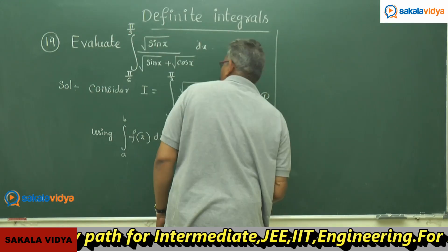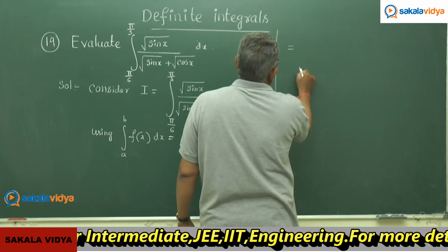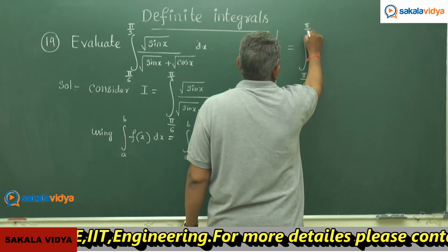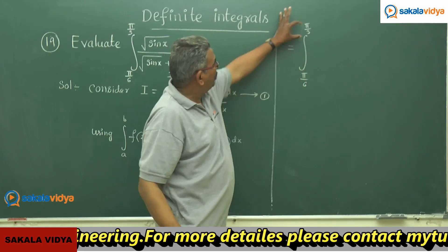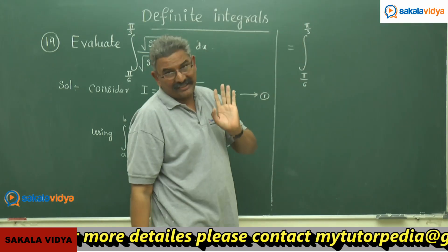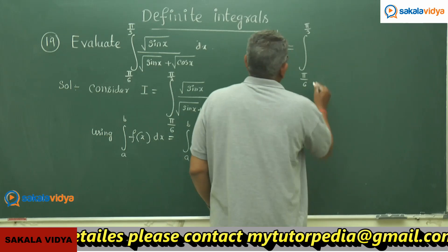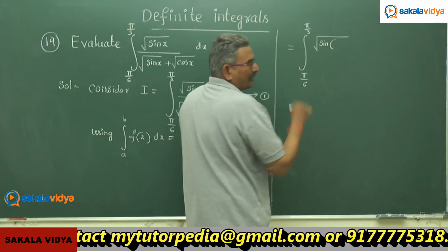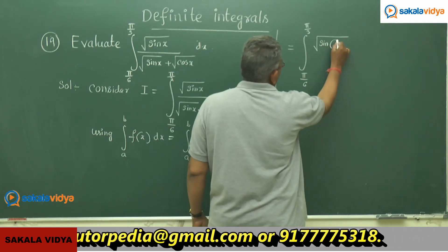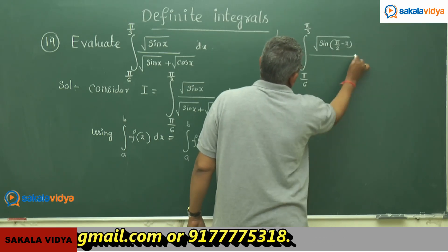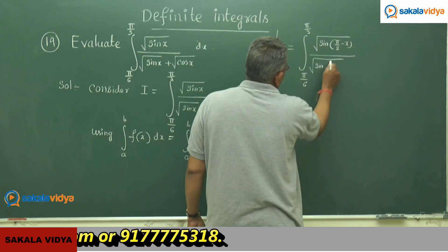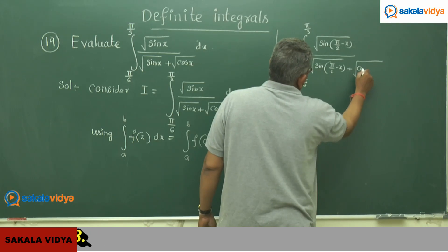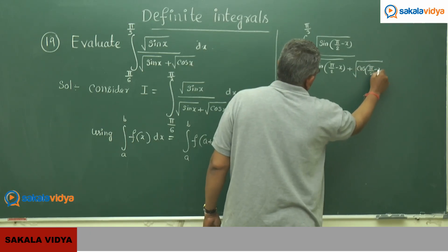This can be written as integral from π/6 to π/3. π/6 means 30°, π/3 means 60°, and 60+30 = 90, so a+b = π/2. Therefore we write √sin(π/2−x) in the numerator, and √sin(π/2−x) + √cos(π/2−x) in the denominator, dx.